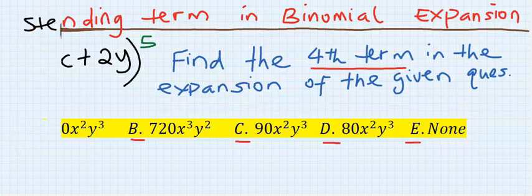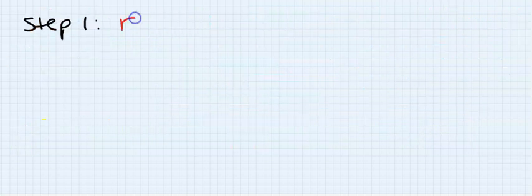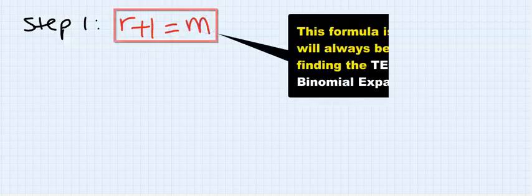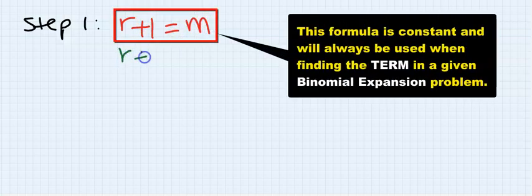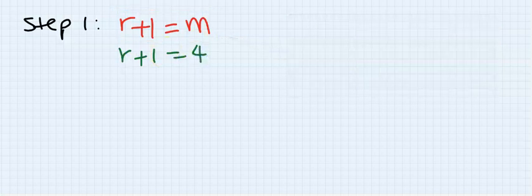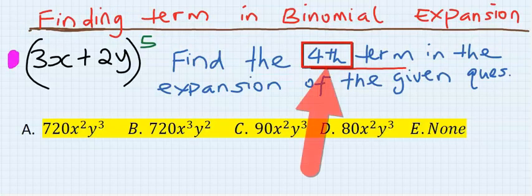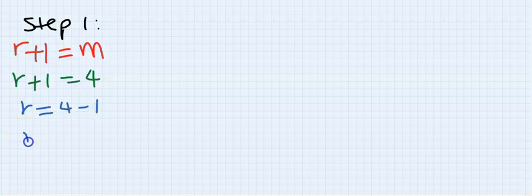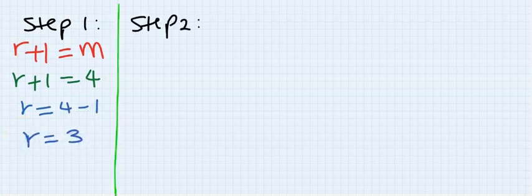Step one: r plus one is equal to m. Here we have r plus one equal to four, so m is four in this question. Therefore r is equal to four minus one, and r equals three.